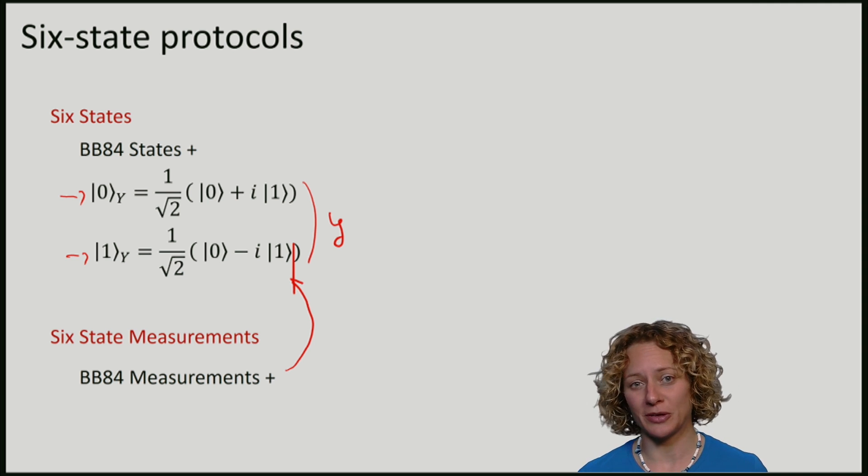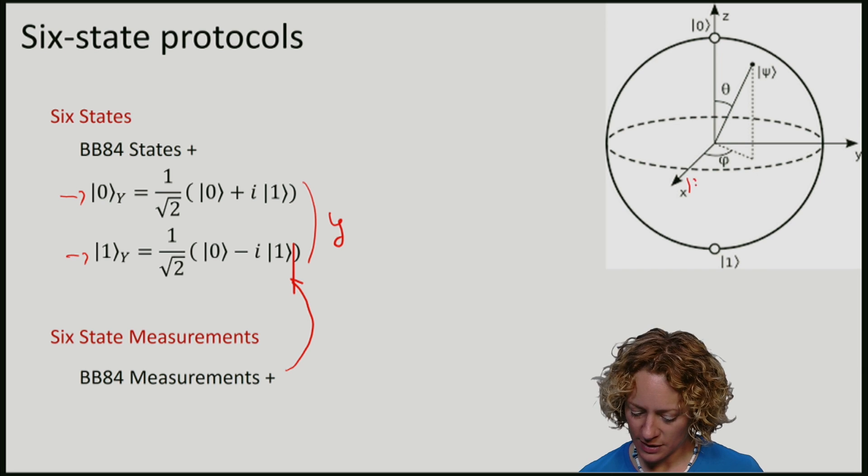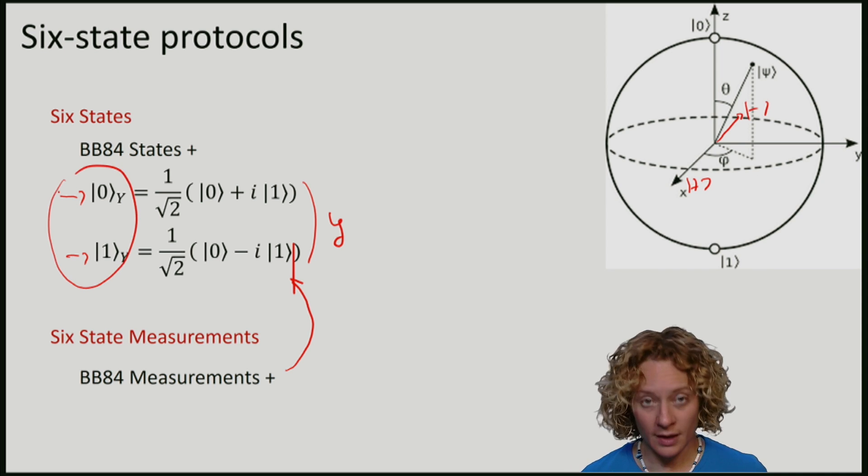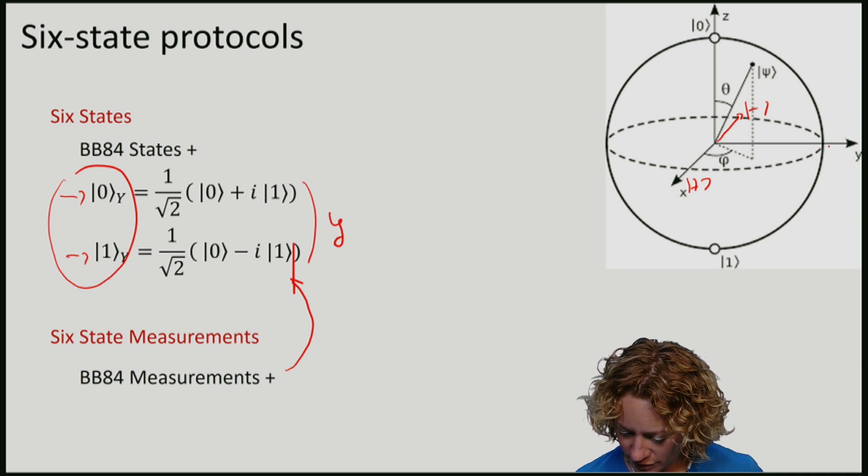If you think about the Bloch sphere, these six states are not in the XZ plane. Here is 0, here is 1, here is plus, here is minus. But instead, these states are the eigenstates of Y, so they lie at the right and left of the Bloch sphere.